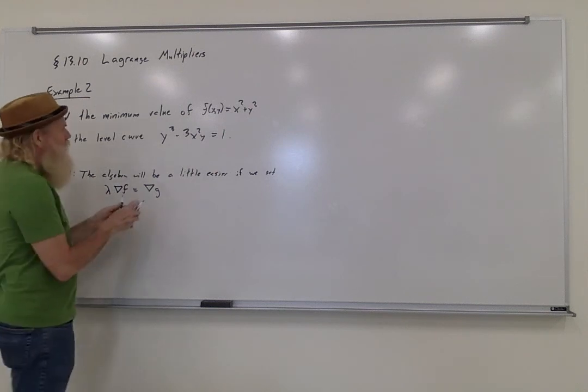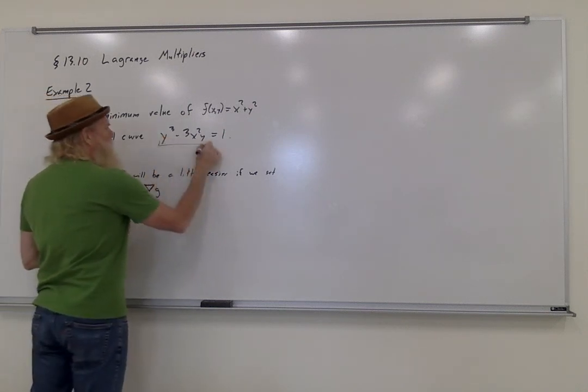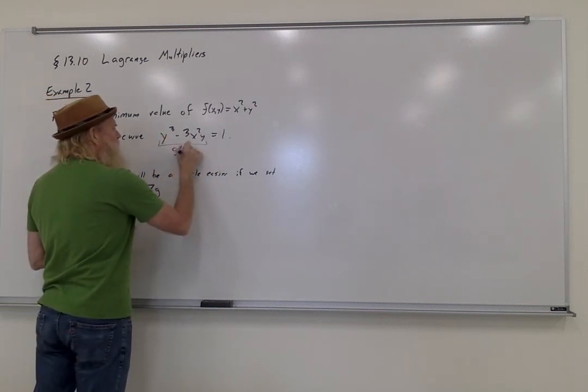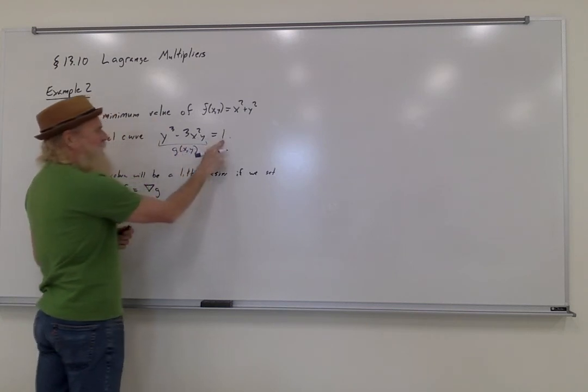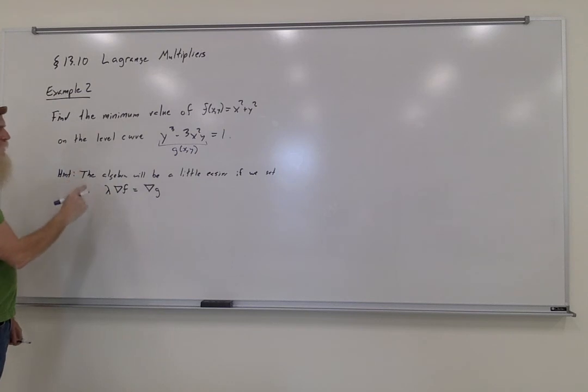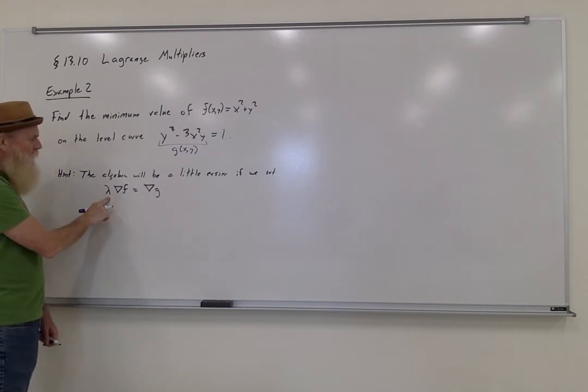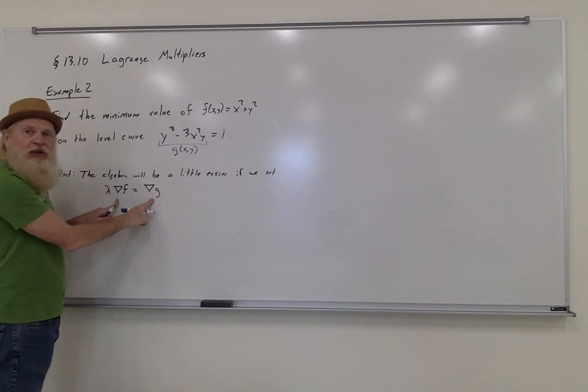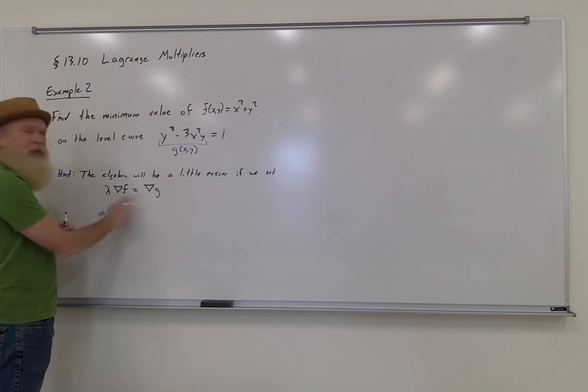Notice that this level curve is already written in the form g of x and y equals a constant. Now I'm going to show you a couple of tricks as we go along in this one. This problem will be a little bit easier if I put the Lagrange multiplier with gradient f rather than with gradient g. Remember that all this equation says is that the two gradient vectors are parallel to each other, so it doesn't really matter which side I put the lambda on.